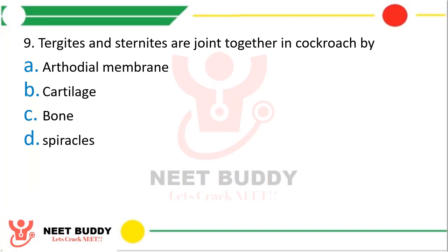Question nine: Tergites and sternites are joined together in cockroach by — option A, arthrodial membrane; option B, cartilage; option C, spiracles; option D, bone. The correct answer is option A, arthrodial membrane.